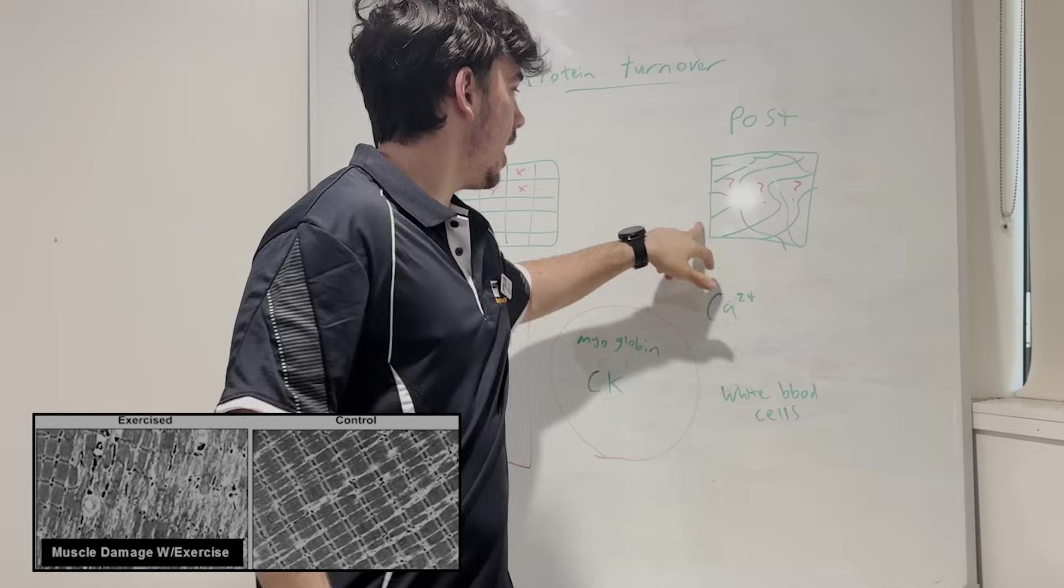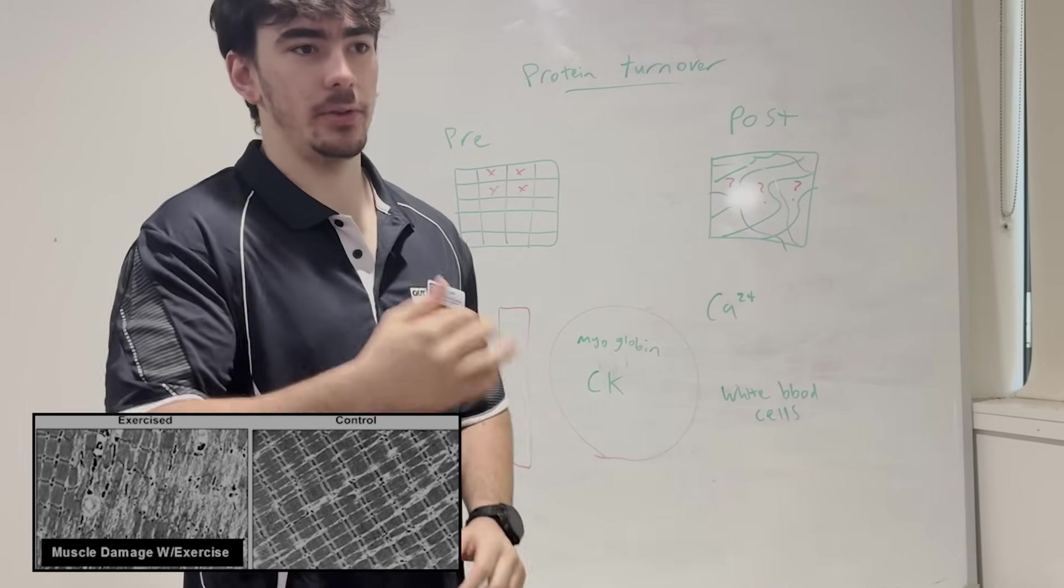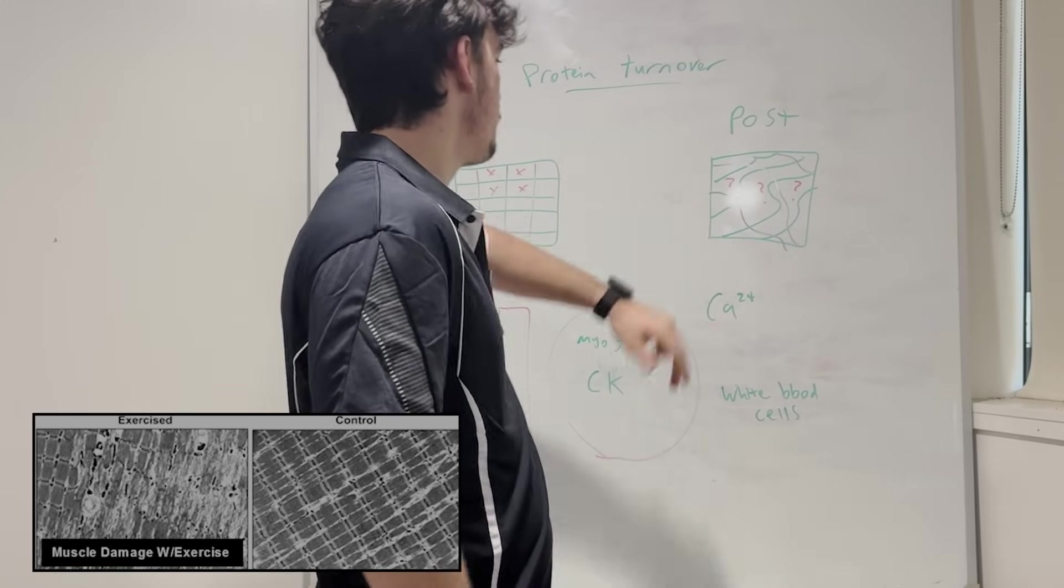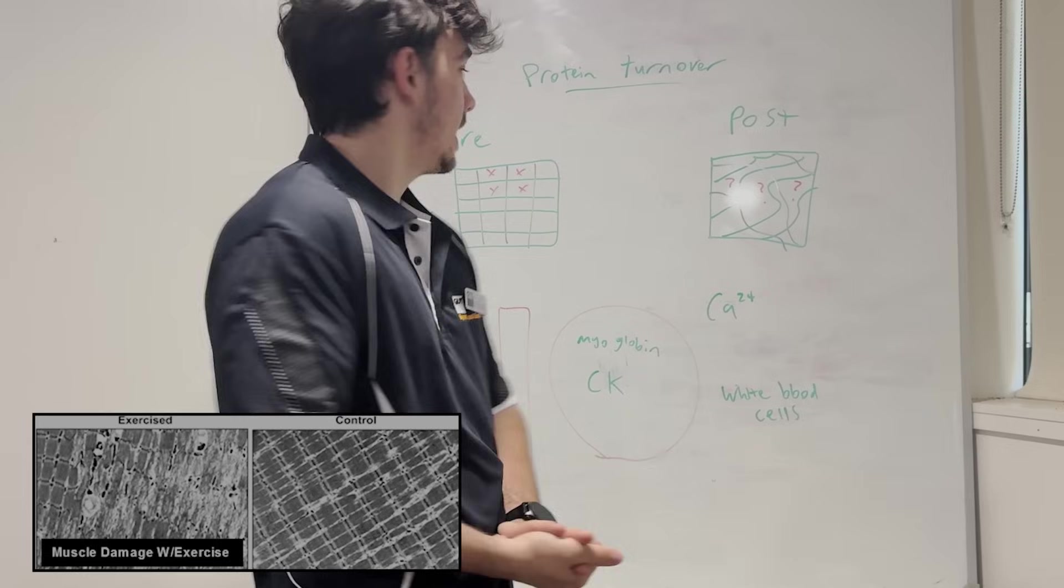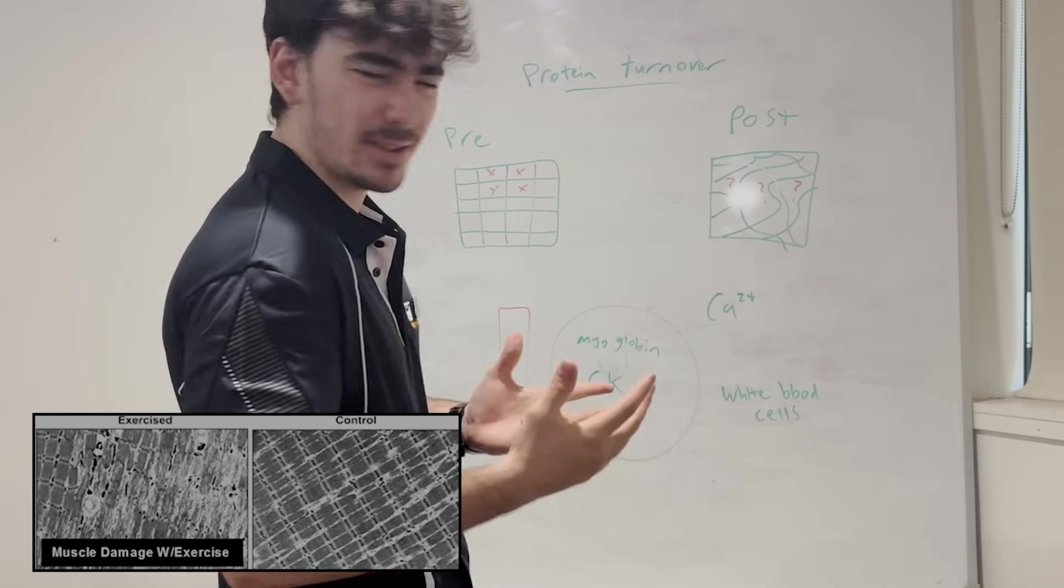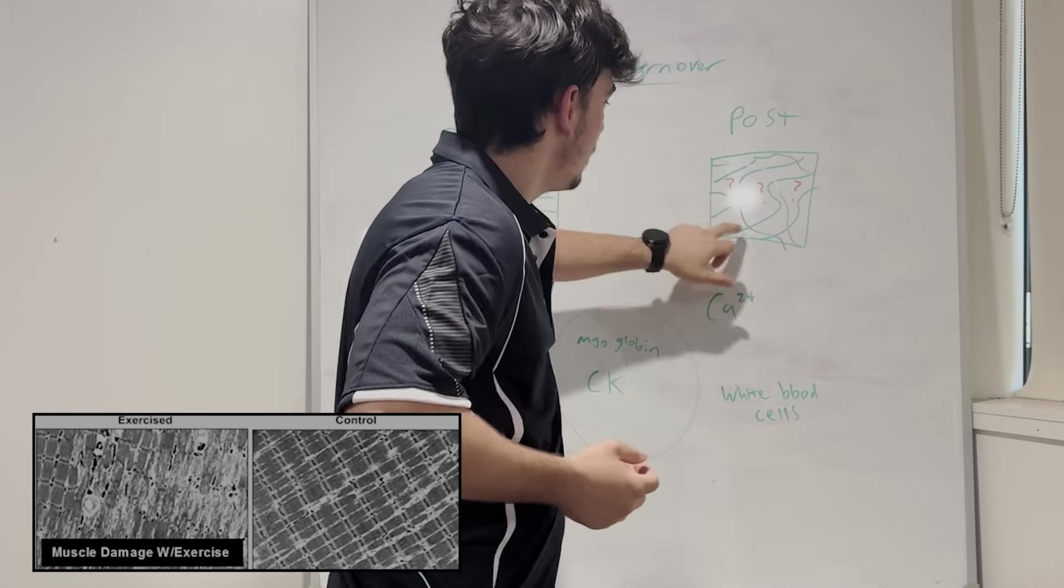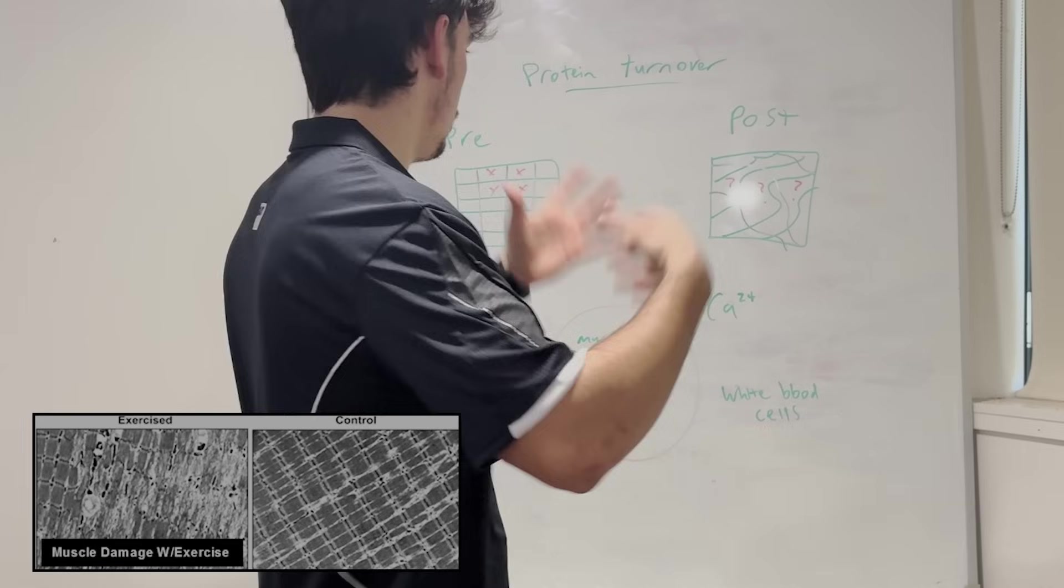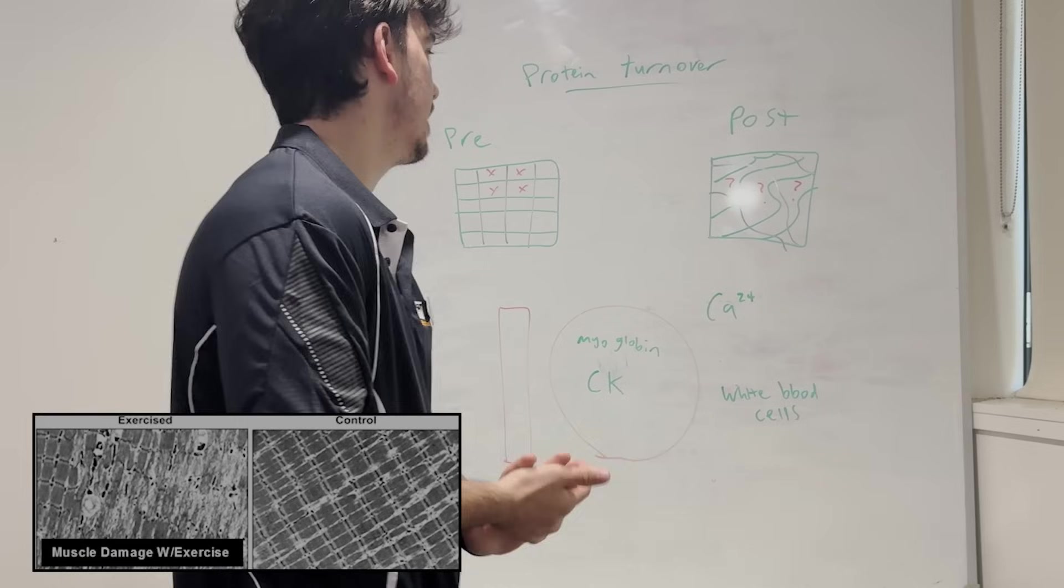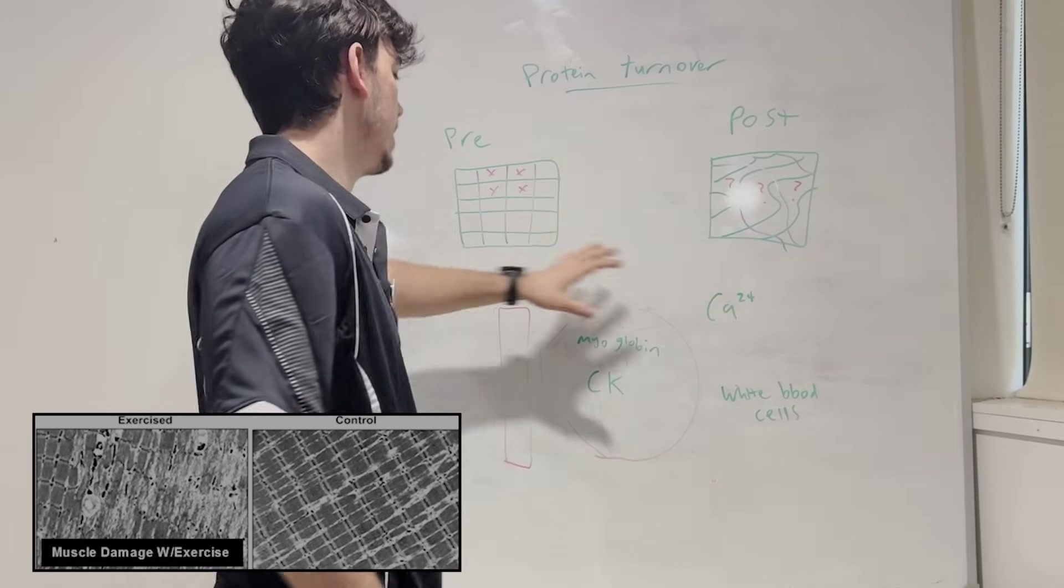But then we do a hundred eccentric reps of squats, you know, really focusing on the eccentric phase because that's when you're going to damage your muscle the most. And look, suddenly everything looks a bit funky. I've even drawn little question marks in here to go, is that a sarcomere? Is that a sarcomere? So, you know, our Z lines are quite messed up all over the place. Same with our myofibrils. They're a bit dodgy. So yeah, that's showcasing kind of what has a look inside the muscle.